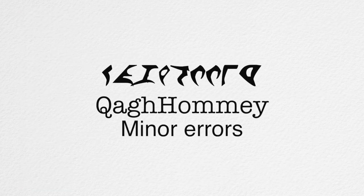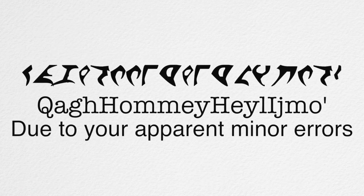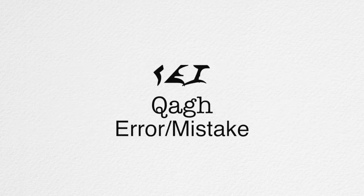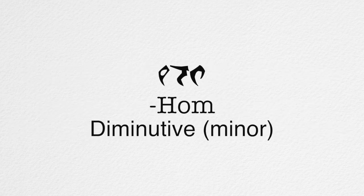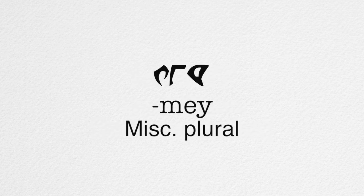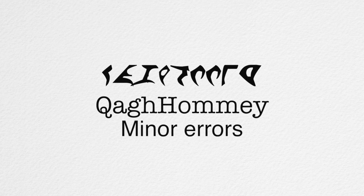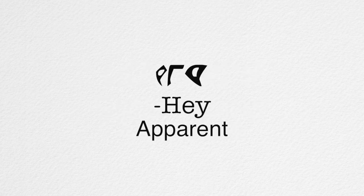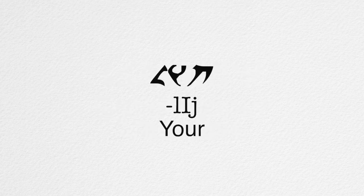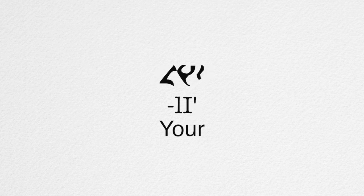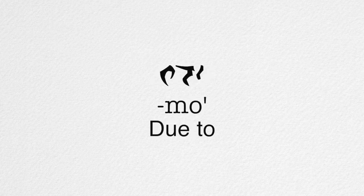One example is the phrase 'Kha Khomei Khelichmo,' meaning 'due to your apparent minor errors.' This one-word sentence looks like a monster, but we can easily split it up and dissect it. 'Khakh' refers to an error or mistake; 'Khom' is a type 1 diminutive suffix making it 'a minor error'; 'Me' is the plural suffix for anything not an intelligent being or a body part; 'Khay' means something was apparent; 'Lij' means it belonged to you; and 'Mo' means it was due to that. Simple.